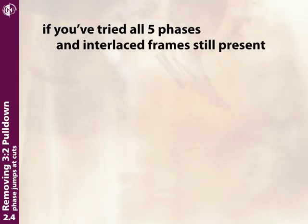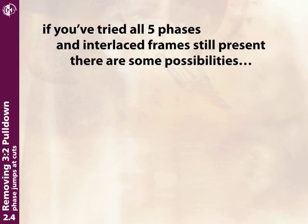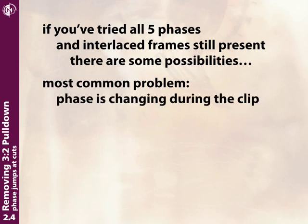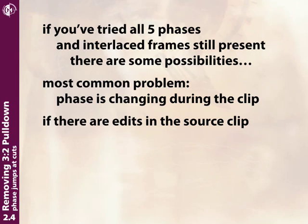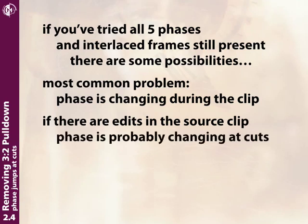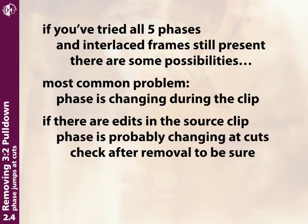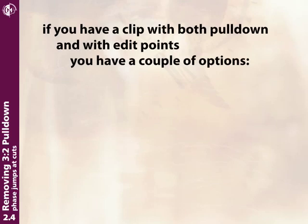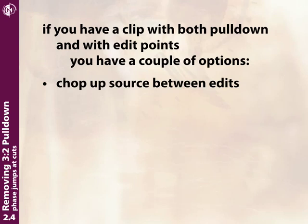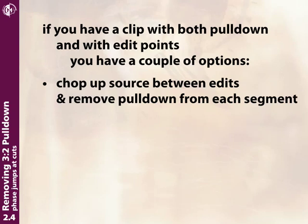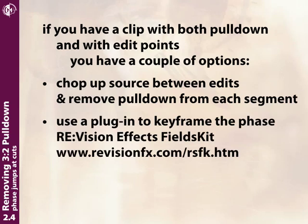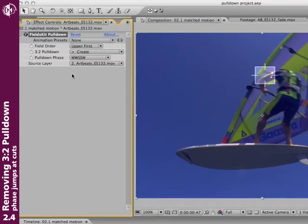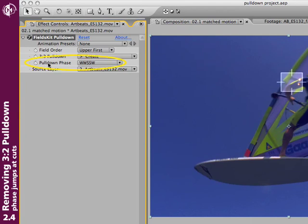Now if you've tried all five phases and you're still seeing interlacing artifacts, a few other possibilities exist. The most common is that the phase is changing throughout the clip—if there are edits during the clip, the phase may also be changing at every single edit. You've got a couple of choices: one, go back and slice the footage into individual clips from cut to cut, then remove pulldown from each individual cut. The second choice is a plugin—Revision Effects Pulldown—which lets you keyframe the phase so you can change it at every single cut.